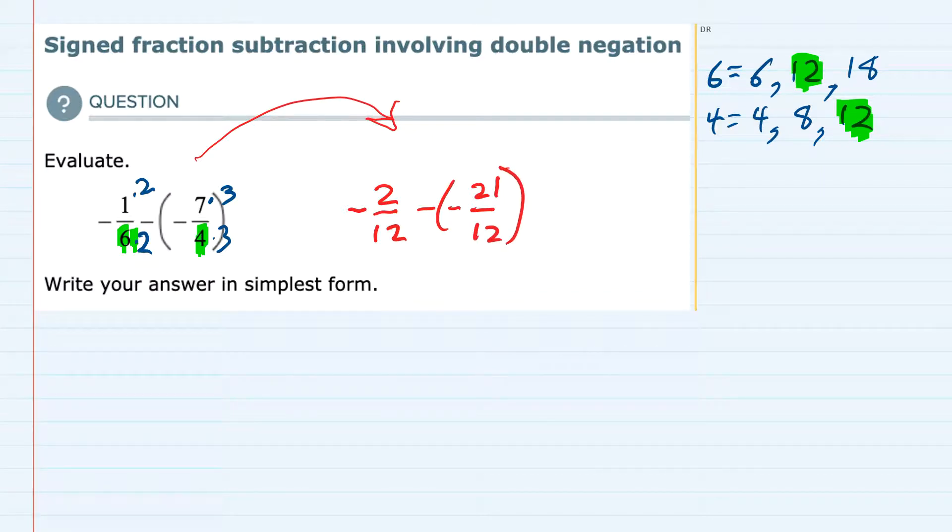We have rewritten the problem, but now with a common denominator of 12. So now we can turn our attention to the fact that we have subtraction and these negatives.